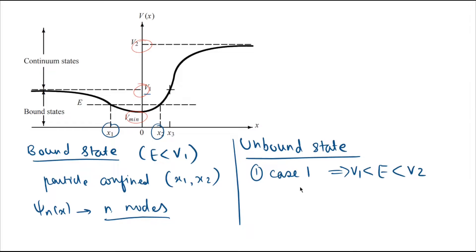Here, particle motion is infinite only towards the negative x-direction—that is, the particle can move between minus infinity to x3, from this side to minus infinity. For case two, our energy E is greater than V2.